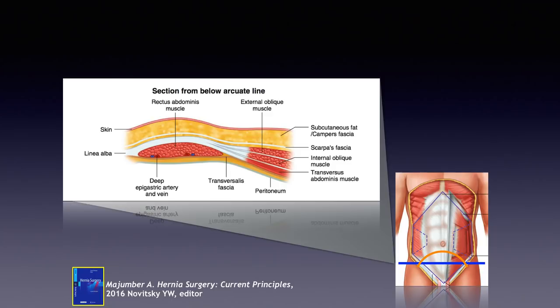The linea semilunaris is the lateral border of the rectus abdominis muscle. Its relationship to the midline varies depending on the width of the rectus abdominis, which averages 7.5 centimeters — I've seen it as wide as 14 to 15 centimeters and as narrow as 4 centimeters. This has clinical implications for retrorectus repair and mesh placement behind the rectus, since the retrorectus space can limit the size of mesh you place. It's important to know the average rectus width for this reason.